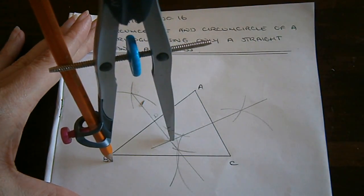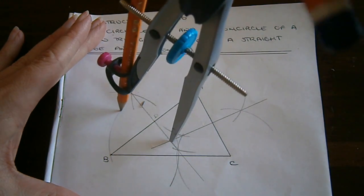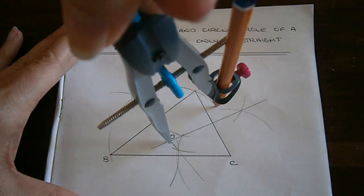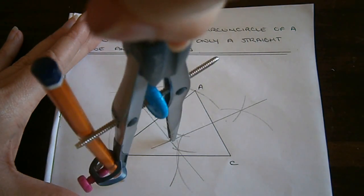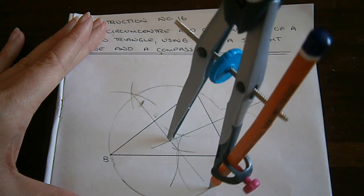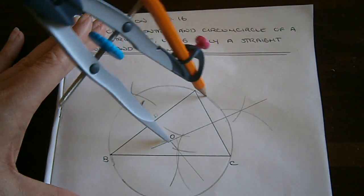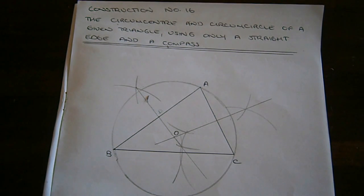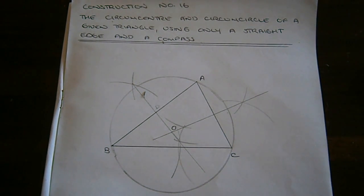From here I draw a circle using the compass and this circle goes through all three vertices of the triangle. See ya then.